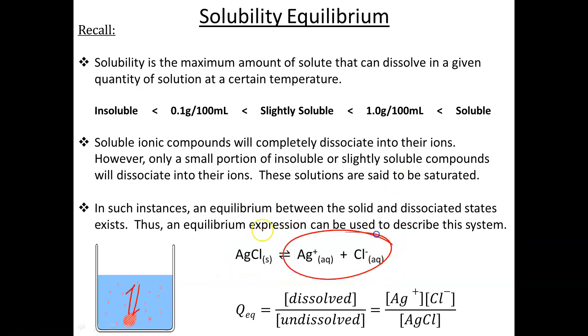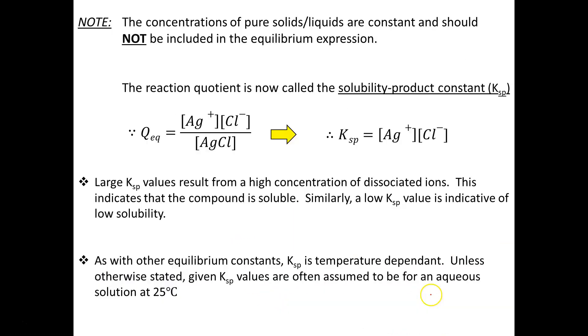So we can't call it products over reactants. We need to call it dissolved over the undissolved component. Now remember, when we set up this equilibrium expression, because silver chloride is a solid, we don't factor it in. The concentration of pure solids and liquids are constant and should not be included in the equilibrium expression. Thus, we simplify by getting rid of the denominator. This is known as the solubility product constant, Ksp.